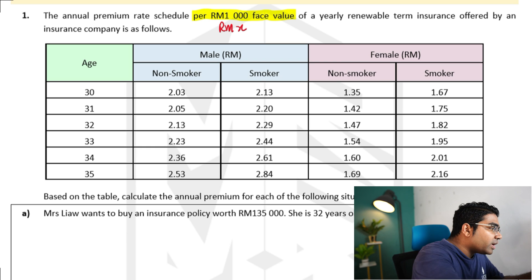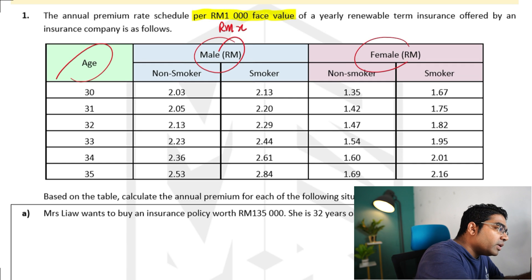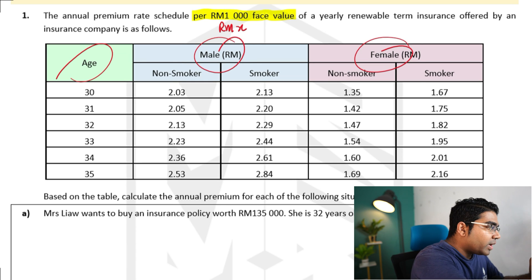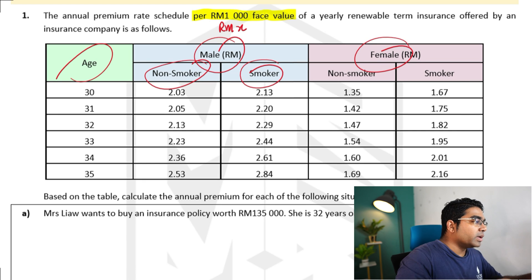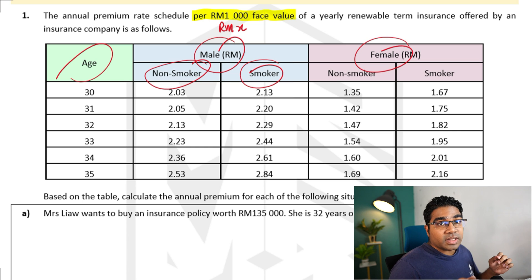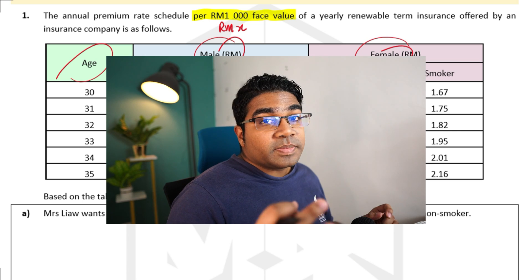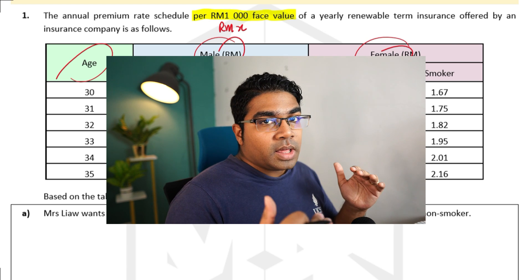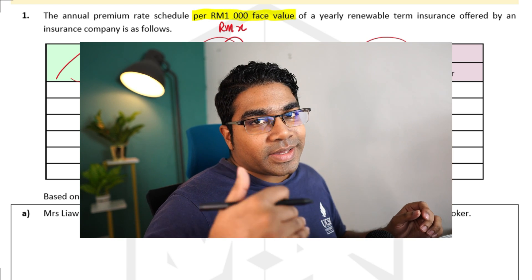As you can see, the rates are affected by age, by gender — whether it's male or female — and also by whether the person is a smoker or a non-smoker. This is because all these factors affect the life expectancy of a person, and therefore it would affect the premium rate too. If the life expectancy of a person was shorter, then the premium rate would be higher as well.